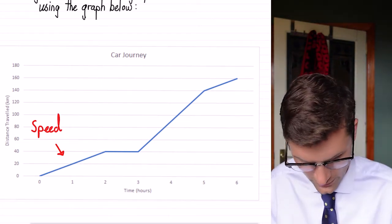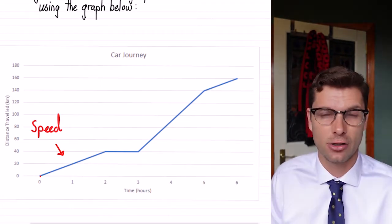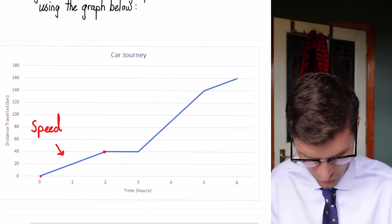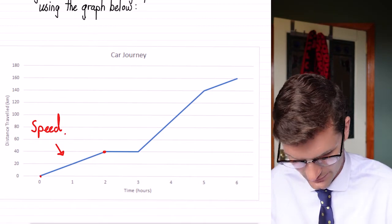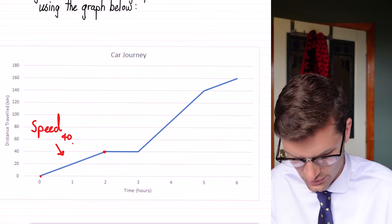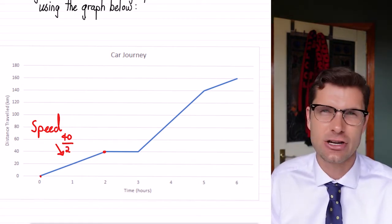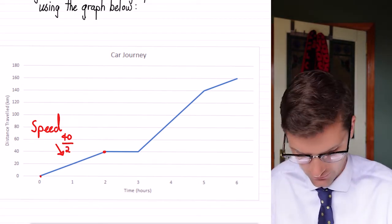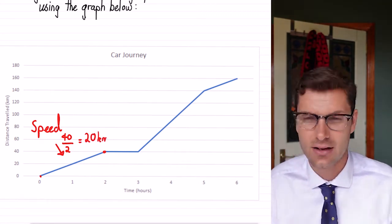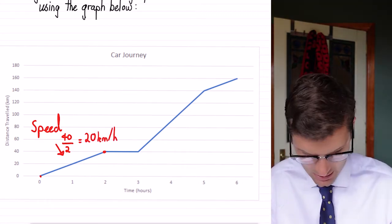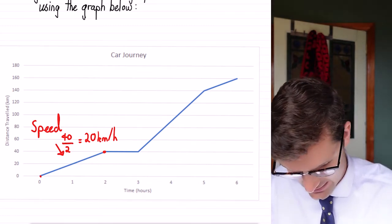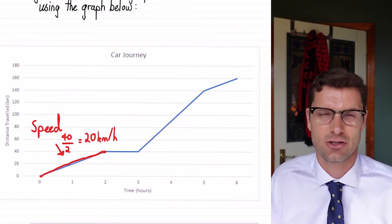So for this section, we've gone from zero kilometers to 40 kilometers. So the distance traveled here is 40 kilometers. And it has taken us two hours, so we divide that by two. So our average speed for that first section of the graph is 20 kilometers per hour. And that's all we've got to do. As long as you can put those dots in and see what's happening in this stretch, it's not too difficult.